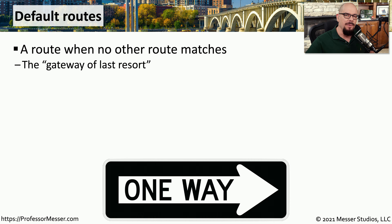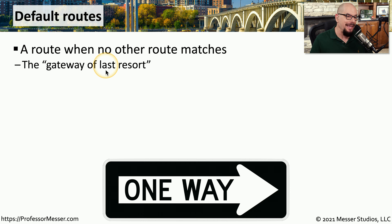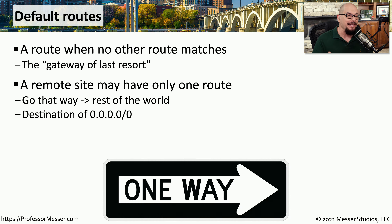It would not be possible to configure a single router with every possible destination in the world. In order to simplify these routing tables, you would commonly add a default route — a route that is used when nothing else in the routing table happens to match. Instead of dropping that packet because there's no matching destination, you send it out this default connection. This is sometimes referred to as a gateway of last resort. A router at a small remote site might only have a default route, sending anything inbound out to the internet.